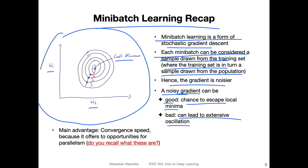But the problem is that it can lead to oscillation. So in this case here on the left hand side, if I use the whole training set I take steps perpendicular to the contours, but with mini batches that path is less direct. It's not so bad, but it is of course not as good as the direct path. So there are pros and cons of using mini batch learning. Today we will learn also about a technique like momentum that can help with that.